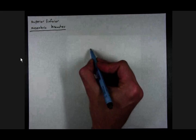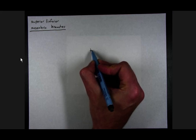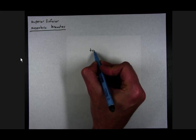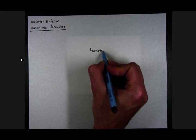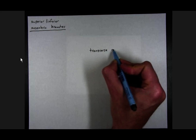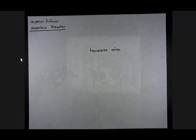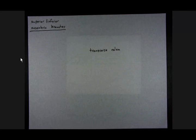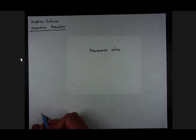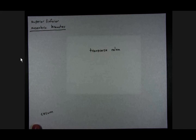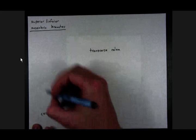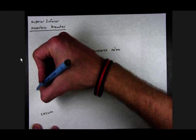In terms of landmarks to start off with, I'll just put a label here for transverse colon. Down in the bottom left is the cecum. Then from the cecum we have the descending colon.